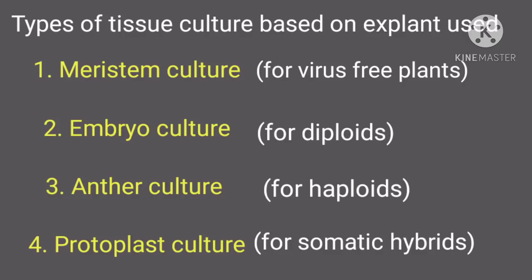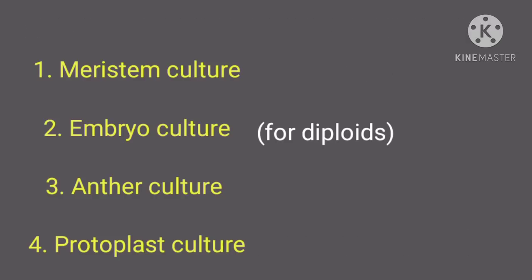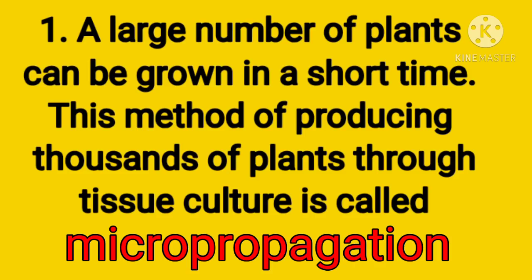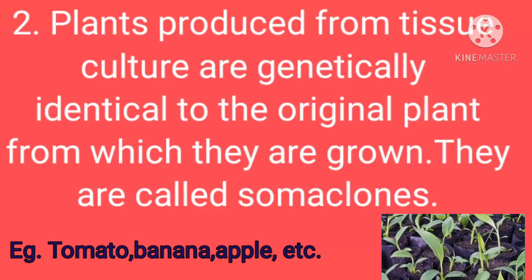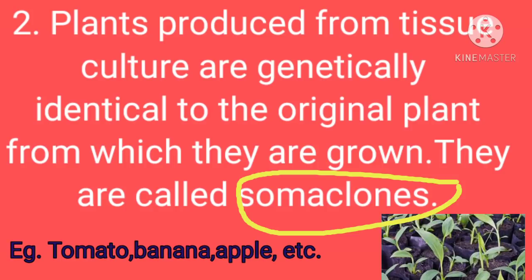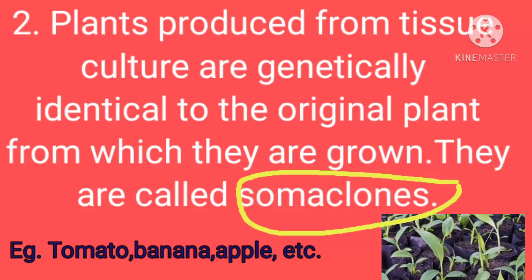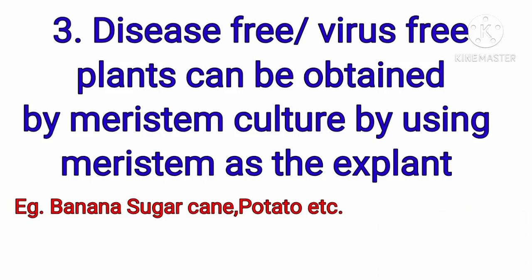Tissue culture is a method by which a large number of plants can be grown in a short time. This method of producing thousands of plants through tissue culture is called micropropagation. The plants produced through tissue culture are genetically identical to the parent plant and are called somaclones. Examples include tomato, banana, and apple.